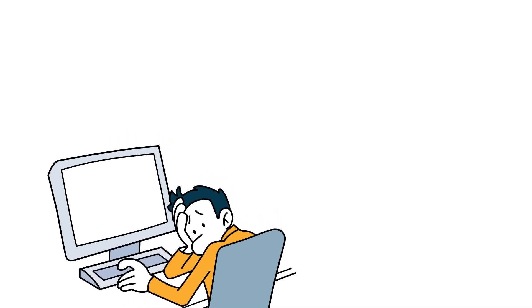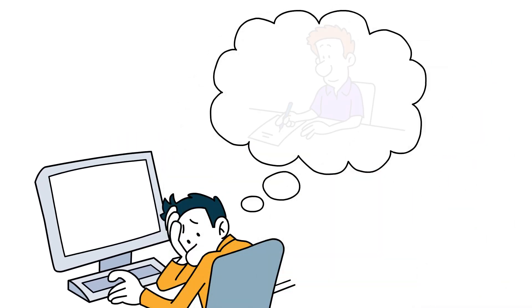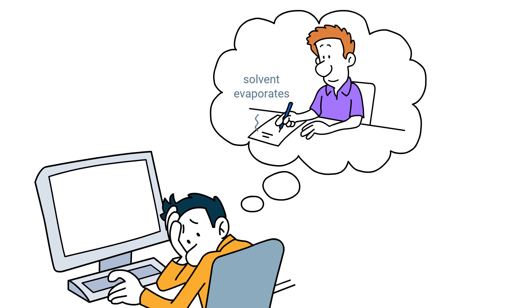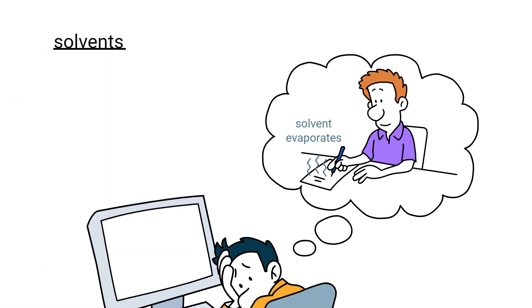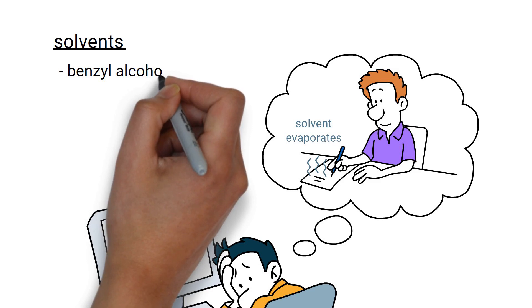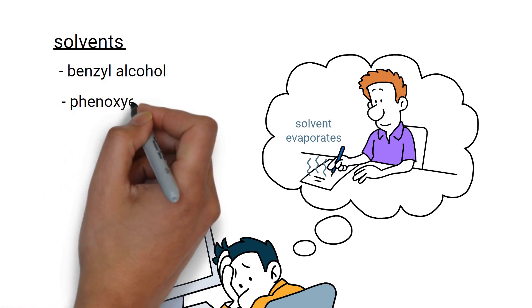Remember life before keyboards? We had pens! You wrote on a piece of paper with a liquid and it dried. This works because solvent from the ink evaporates and leaves a polymer containing pigment on the paper. These inks tend to use solvents, such as benzyl alcohol or phenoxyethanol, to enable fast drying.